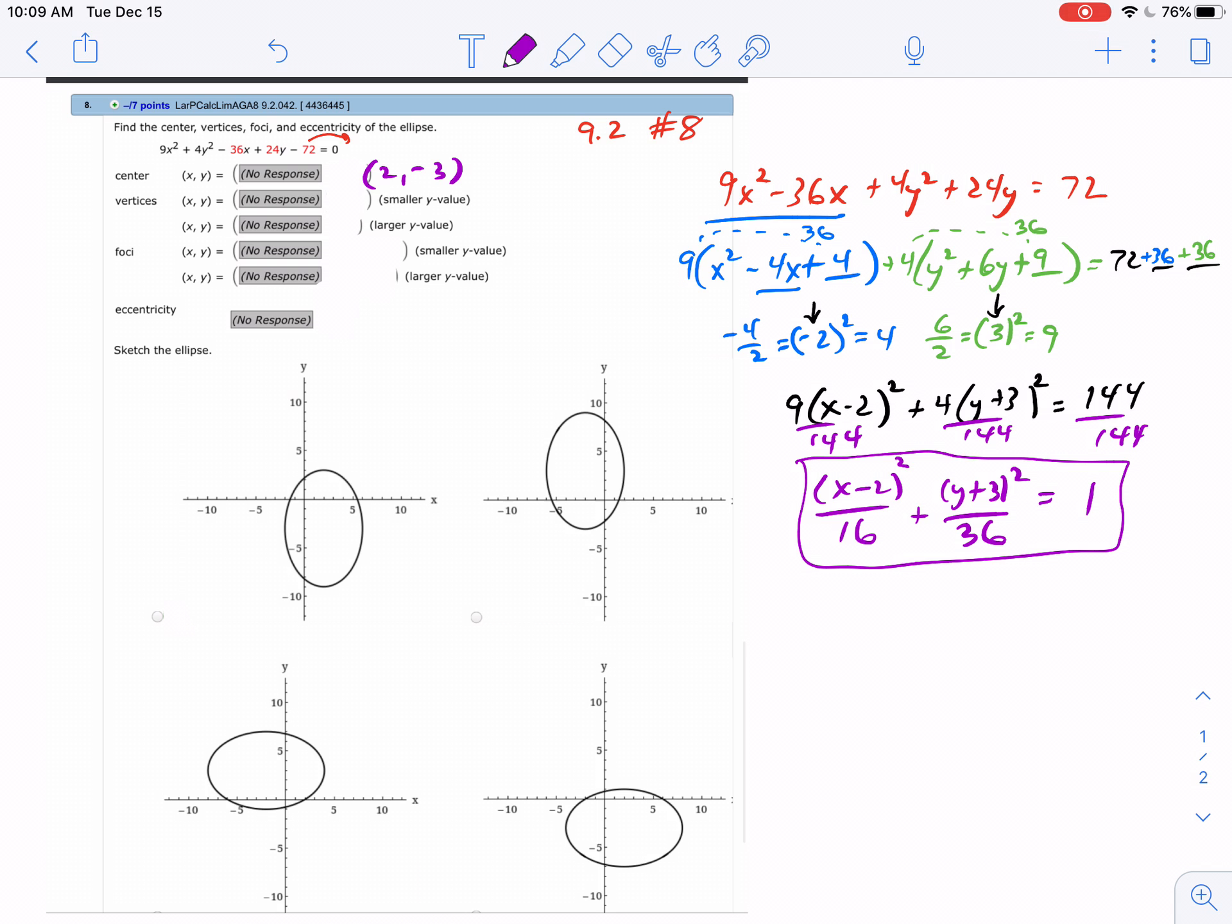For the vertices, remember they come from the larger denominator. Because that's under y, I take the square root of 36, which is 6.